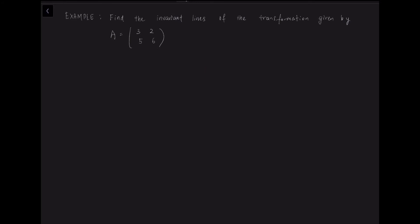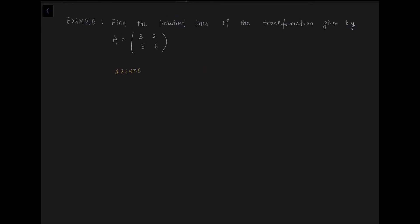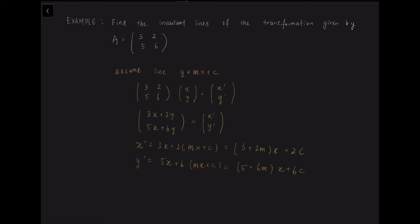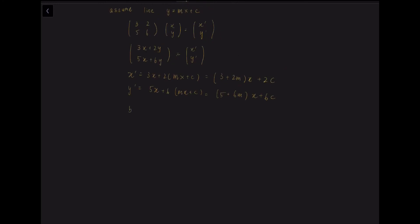Finally, we want to find the invariant line of the transformation given by this matrix. We assume the line y equals mx plus c. We let an arbitrary point x and y undergo the transformation and map to x' and y'. After performing the matrix multiplication, we obtain linear equations. We rewrite: x' equals 3x plus 2 times (mx plus c), simplifying to x' equals (3 plus 2m)x plus 2c. And y' equals (5 plus 6m)x plus 6c.